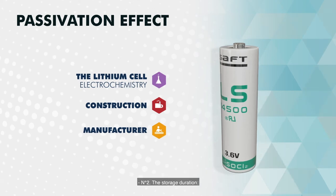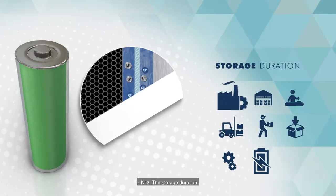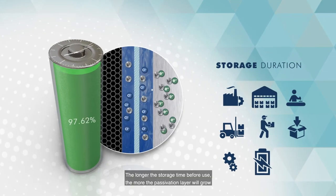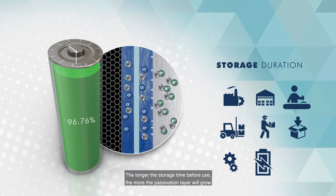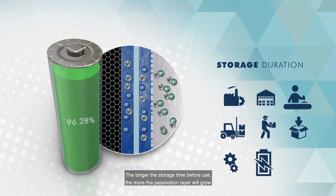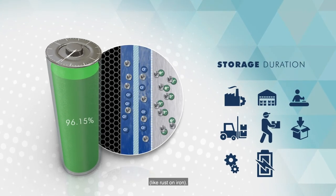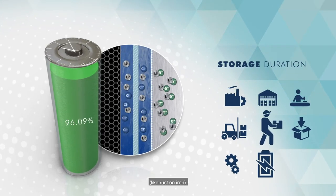Number two: the storage duration. The longer the storage time before use, the more the passivation layer will grow, like rust on iron.